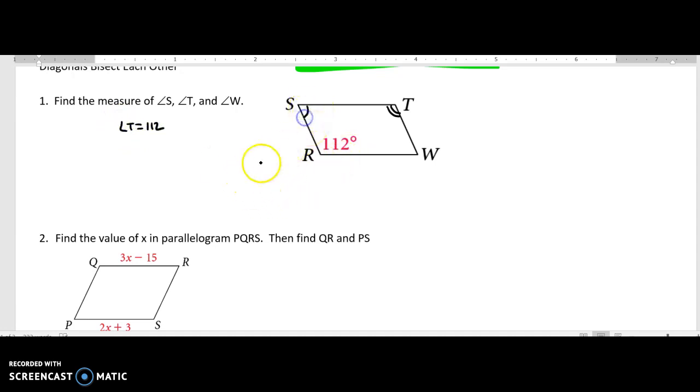So how would I find angle S then? Remember, these are adjacent angles. So angle S plus angle R have to add up to 180. So if R is 112, angle S plus 112 equals 180. All I'm going to do is subtract to find angle S is 68 degrees. Now, if angle S is 68 degrees, then these are opposite angles, so angle W is 68 degrees.